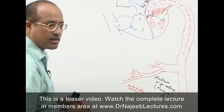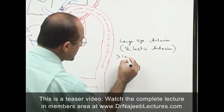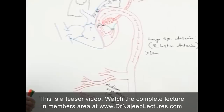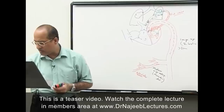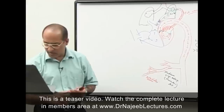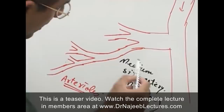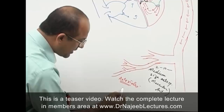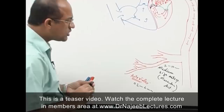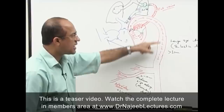Large arteries are usually more than 1 centimeter in diameter. Medium-sized muscular arteries are somewhere between 2 to 10 millimeters. Arterioles are very small, about 0.1 to 2 millimeters. The key point is that blood moves from the left ventricle into the aorta and elastic arteries, then into muscular arteries, then small arteries, and eventually into arterioles.